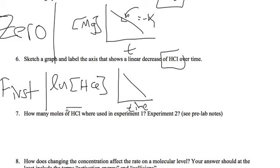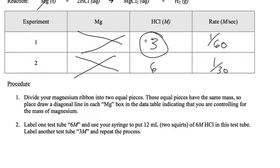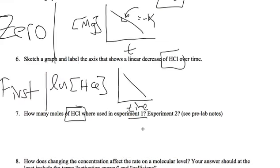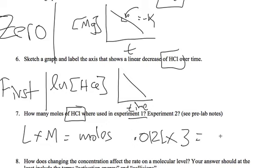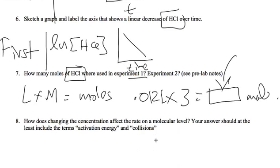How many moles of HCl were used in experiment one? So in experiment one, the molarity was three and we used 12 milliliters of it. So liters times molarity equals moles. So I have 0.012 liters times three equals some moles. I'm not sure, I don't have my calculator on me. But this value is just 0.012 times three.